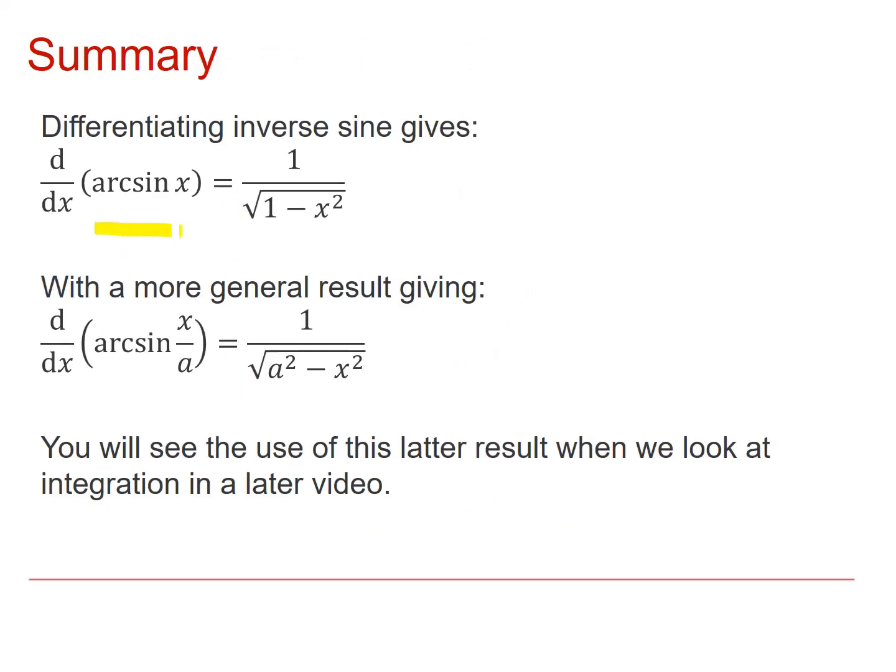So in summary, differentiating arcsin x gives me one over root one minus x squared. Differentiating arcsin x over a gives me one over root a squared minus x squared. And it's this latter result that we will use when we look at integration in a later video.